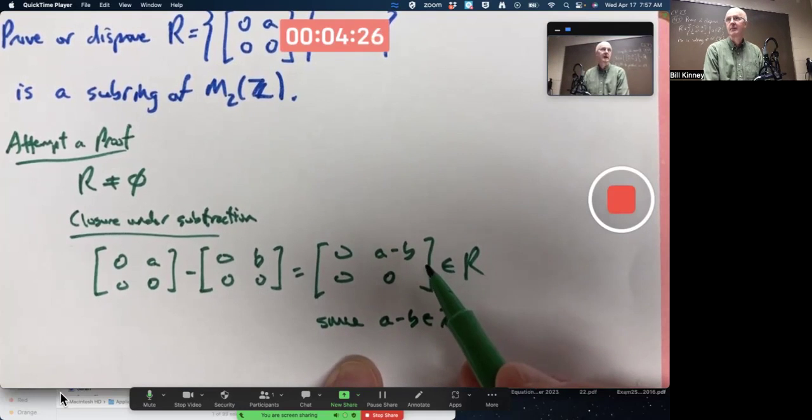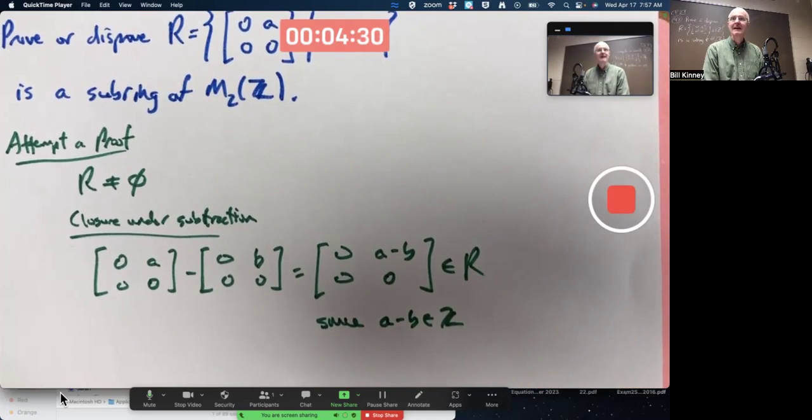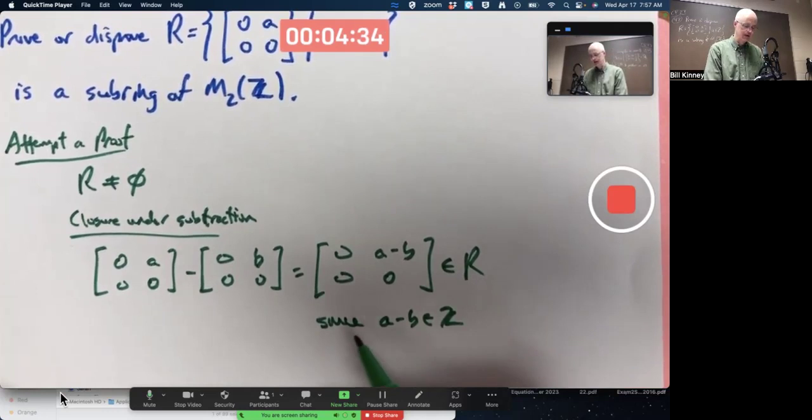not just because there's something non-zero in the upper right corner, but because A and B being integers also has their difference being an integer.